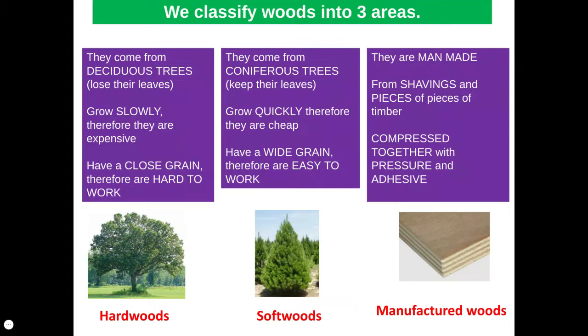In terms of the grain, because softwood trees grow much quicker, their growth rings, which is the grain, are much further apart. That would make them much less dense, much easier to work with, much softer and easier to cut. Hence why we maybe use softwood for a much more large scale manufacturing.